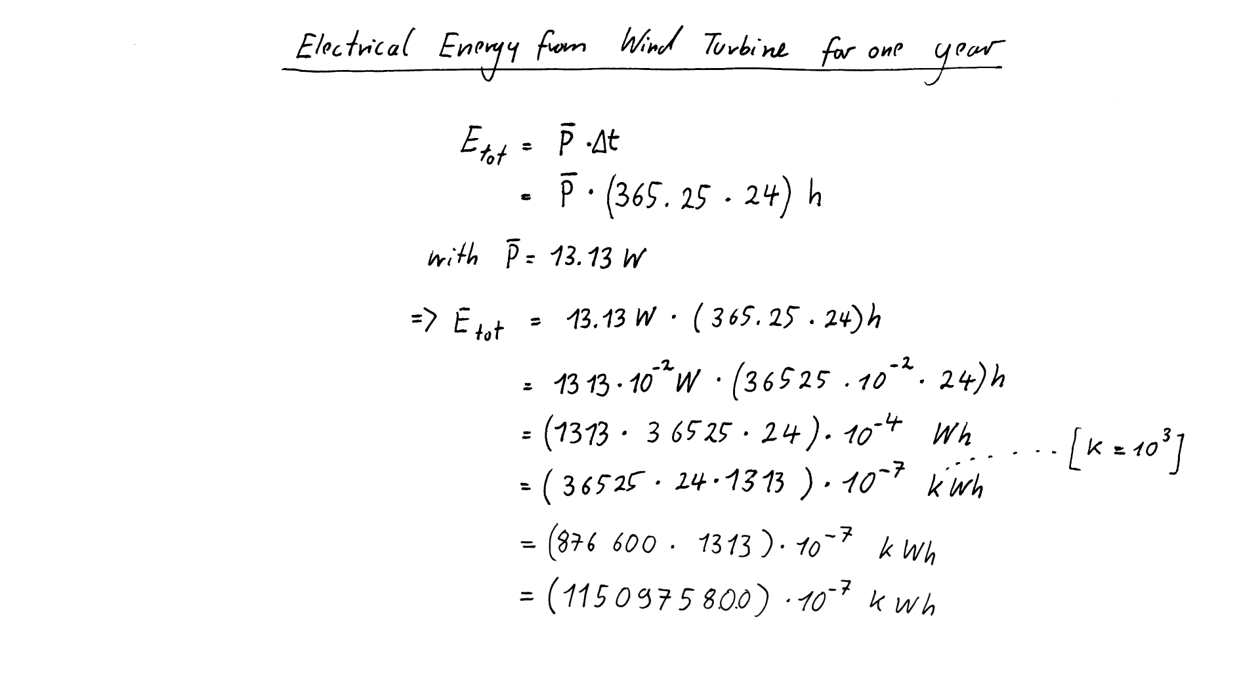Now we can write that down and the only thing left is to retrieve the decimal point. Since the large number has to be multiplied by 10 to the power of minus 7, you simply move 7 places from the right end of the number and place the point right there. So, the end result is that the wind turbine would produce 115.09758 kWh in the time of one sidereal year.